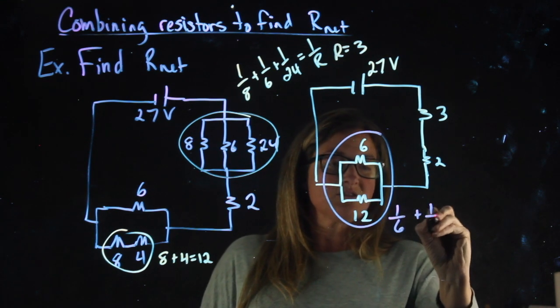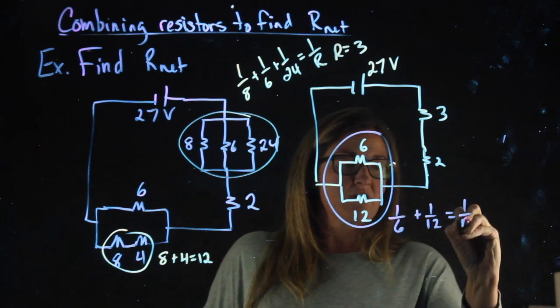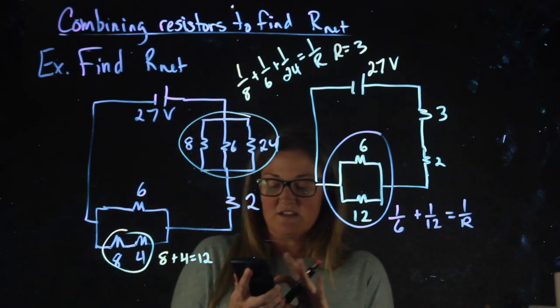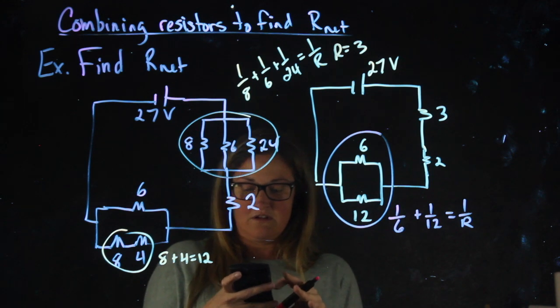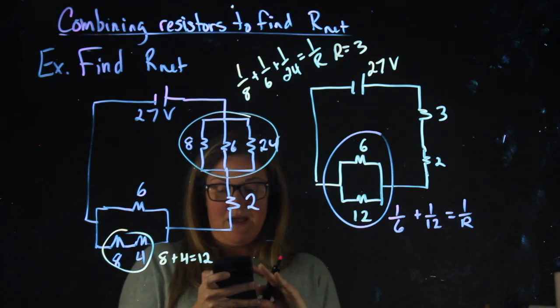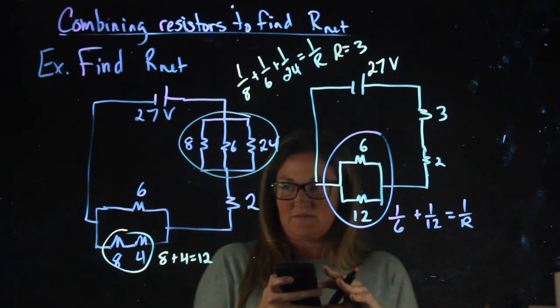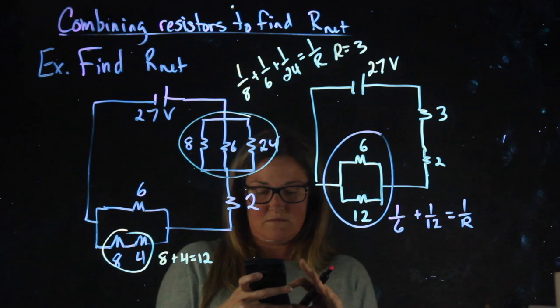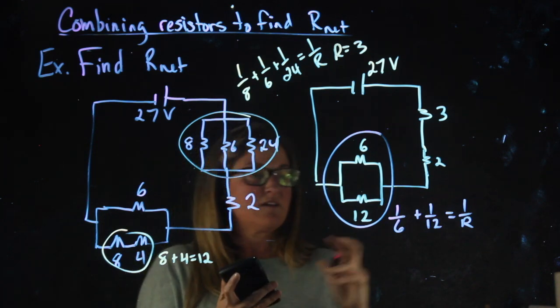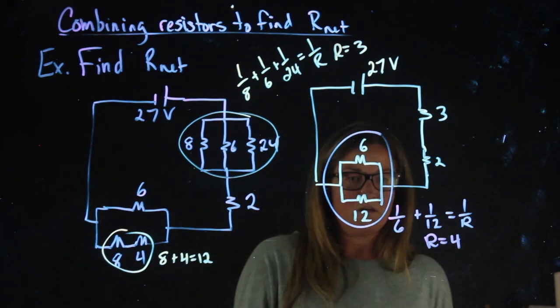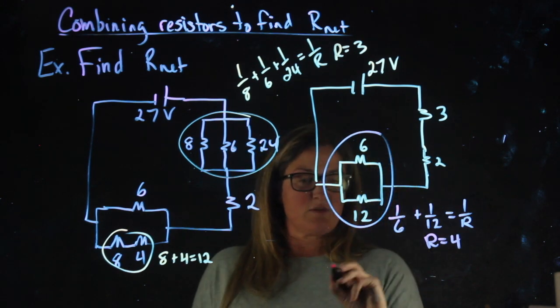So 1 over 6 plus 1 over 12 equals 1 over r. 1 divided by 6 plus 1 divided by 12, then 1 divided by that answer gives me 4. So I'm going to now replace this with a 4 ohm resistor.